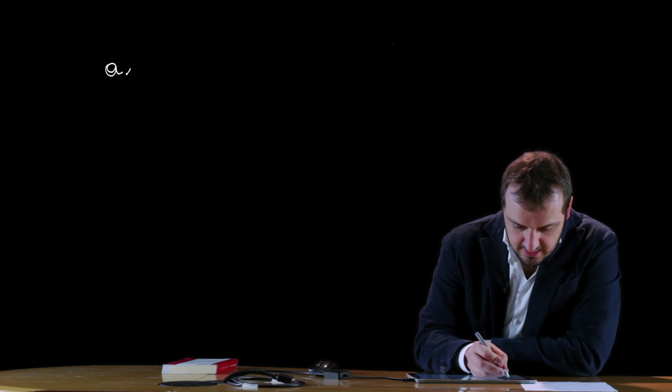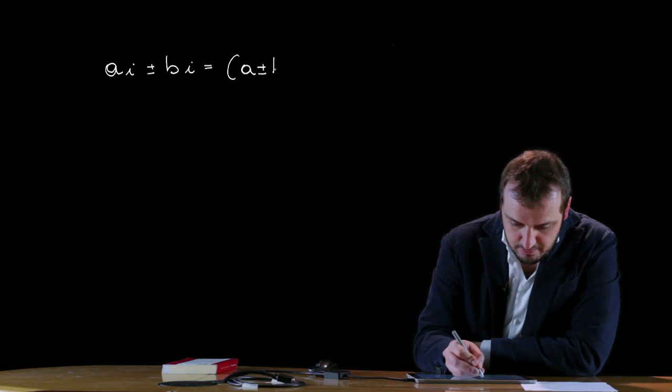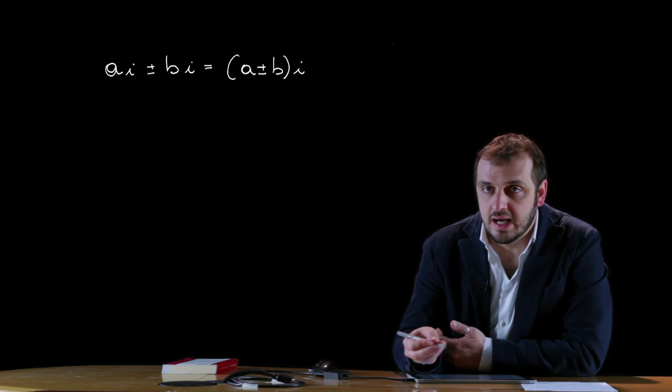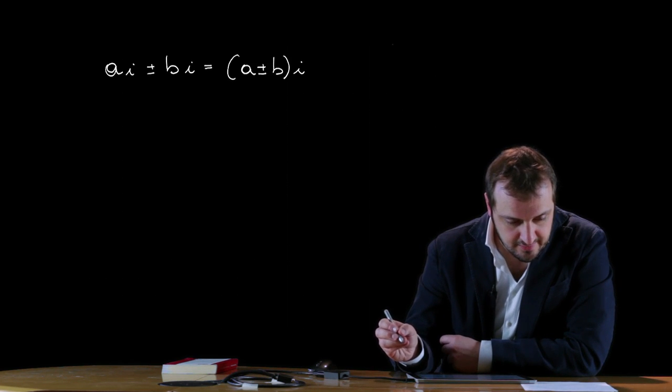Within the set of imaginary numbers we can define several operations. For example, we can add or subtract two imaginary numbers: Ai ± Bi corresponds to the imaginary number (A ± B)i, where A ± B is clearly the real part and i is the imaginary part.